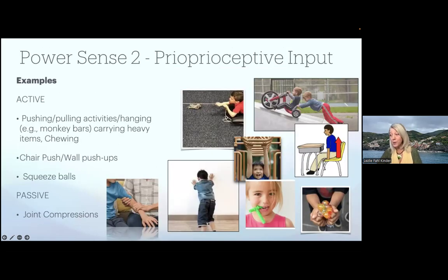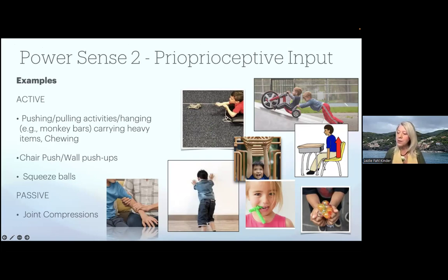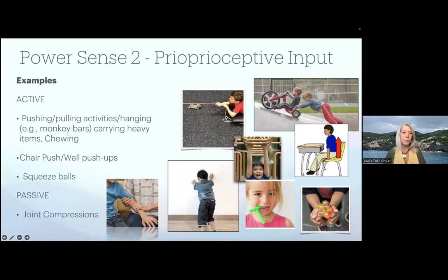Power sense number two is proprioceptive, which is engaged when we use our muscles and joints against resistance, and it can impact our bodies for 90 minutes to four hours depending on whether it's active or passive. Active examples include pushing and pulling activities, hanging like on the monkey bars, carrying heavy items, chewing, doing push-ups, or squeezing against a resistance. A passive example is joint compression.